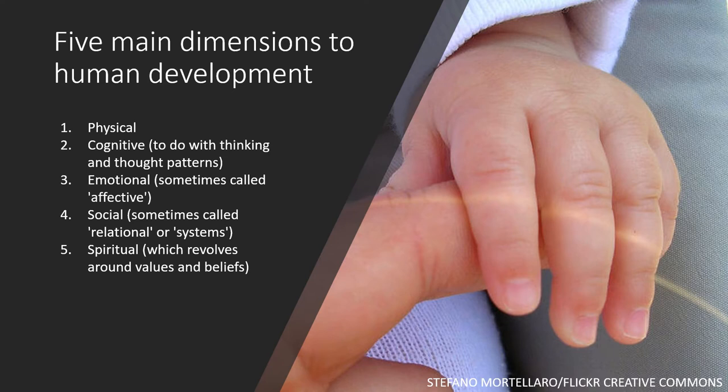Before we explore them, it helps to understand that there are probably five main aspects of human development. Physical, mainly to do with the body. Cognitive, to do with thinking and thought patterns. Emotional, sometimes called affective. Social, sometimes called relational or systems. And the spiritual, which revolves around values and beliefs. Most people enter psychotherapy as clients when something in one or more of these aspects is affecting their quality of life. Similarly, most schools of psychotherapy primarily address one, or at most two, aspects of human development, though they will touch on all of them.